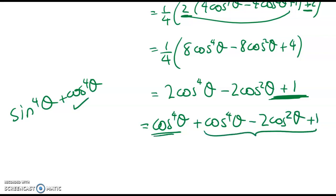So that's good. And now if we look at this, hopefully you guys will see that we've got a perfect square. So I've got cos to the power of 4 theta plus cos squared theta minus 1 all squared.